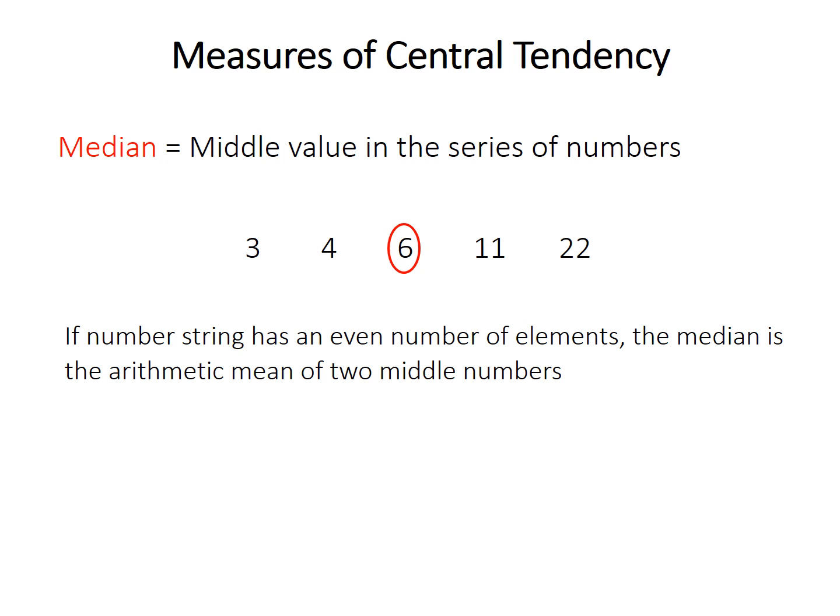If you have an even number of measurements, there is no middle number. So in that case, the median is just the arithmetic mean, the mean which we discussed in the previous slide, of the two middle numbers. So in this case, there's an even number of measurements, so there's no middle number. So the median is just the average, or the mean of 6 and 8, so the median in this case is 7.